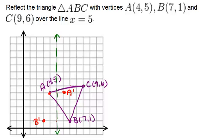And C is one, two, three, four units away, so count one, two, three, four on the other side to get C'. Finally, connect them all to get your image triangle.